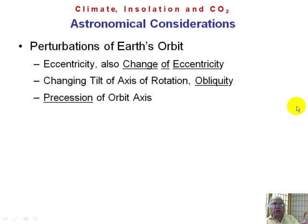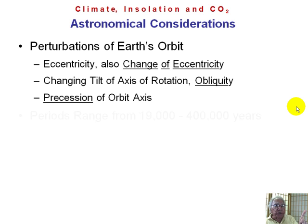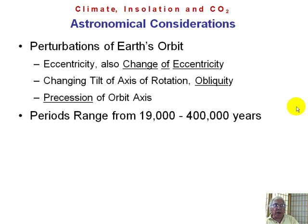Heat received also changes because the Earth's axis is not vertical — it's tilted about 24 degrees, and this tilt is wobbling, which is called the obliquity. Finally, the third variation is that the Earth is precessing. All three of these factors have periods ranging from about 20,000 years to 400,000 years.